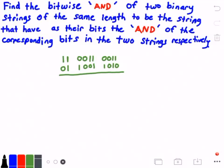Below this here we have our two strings in green, which is 11 0011 0011 and the second string is 01 1001 1010. All right, so what we'll do is I'll put a little note here of how we can do this AND operation.